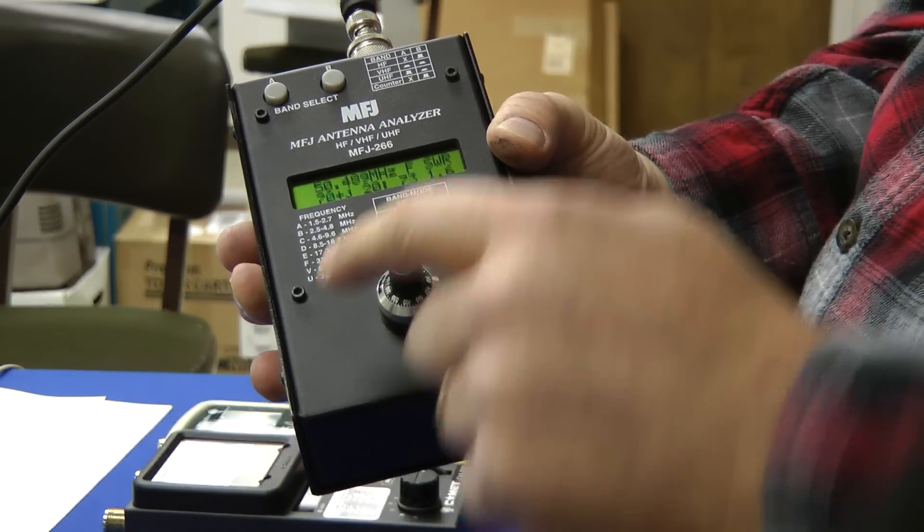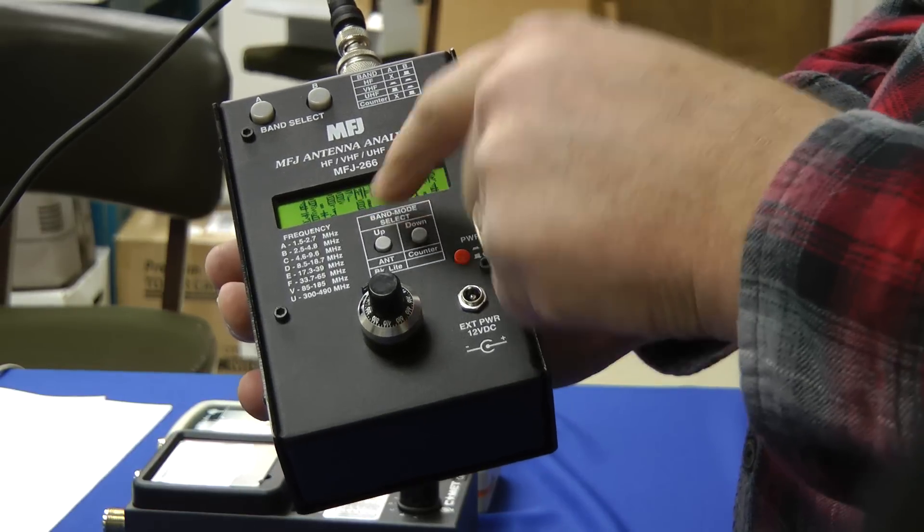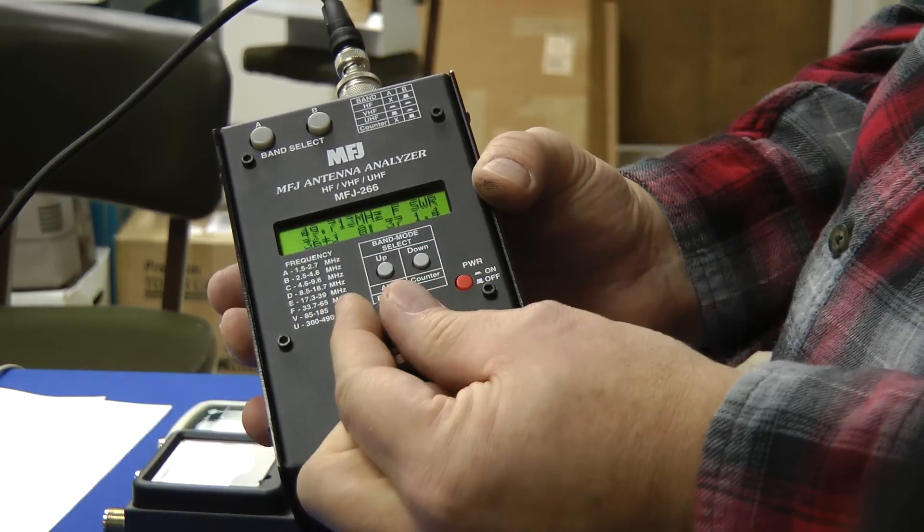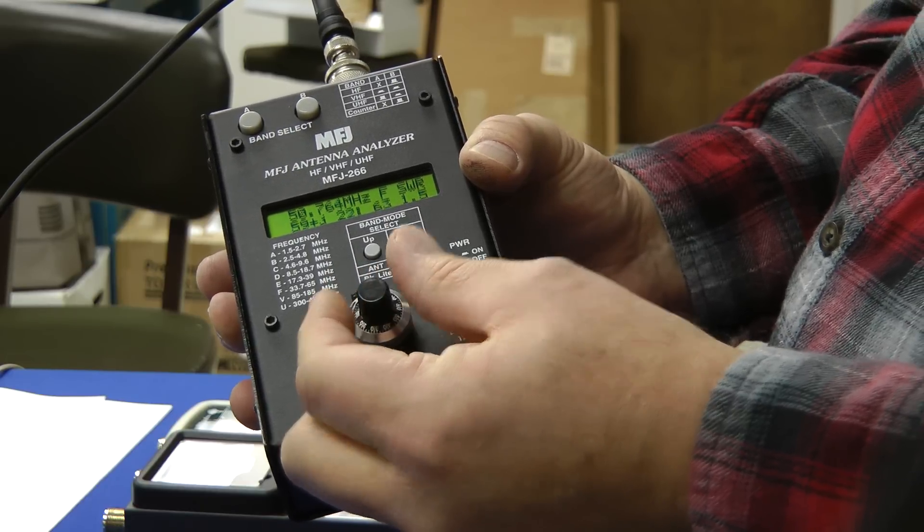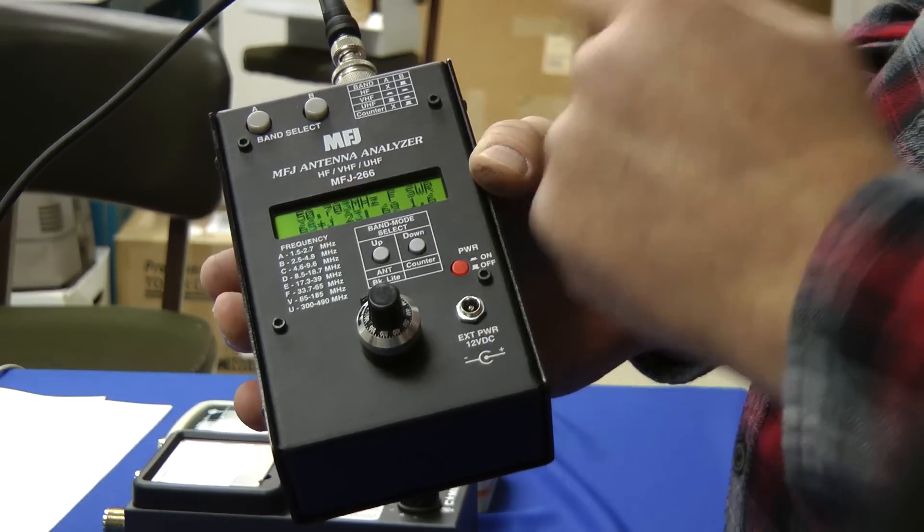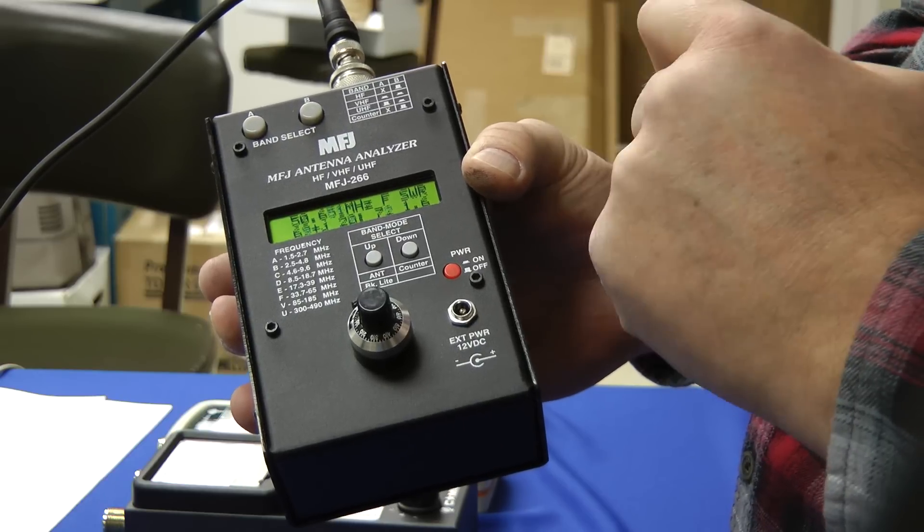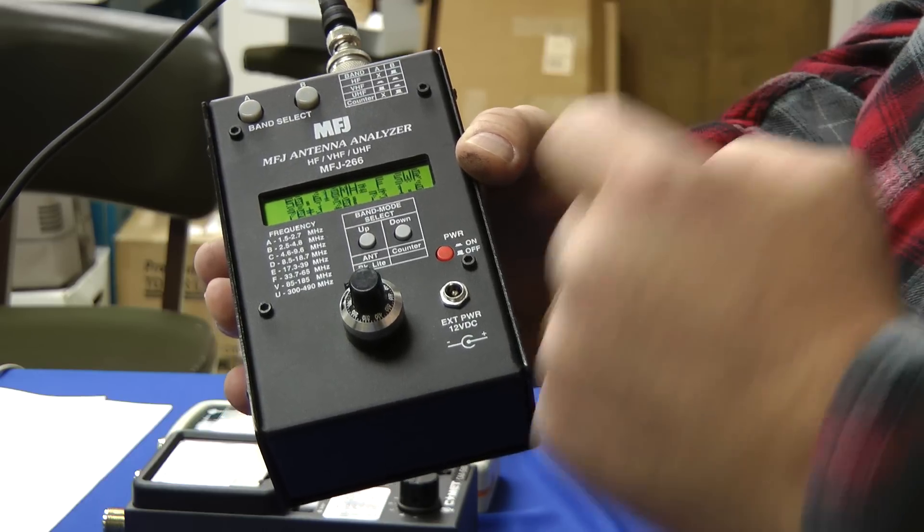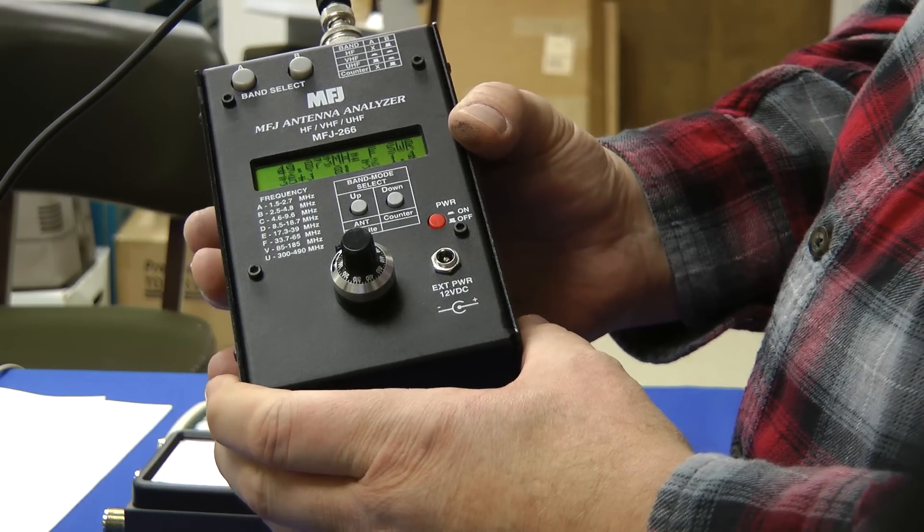Right now I'm looking at 50.4 megahertz roughly. I'll just drop down a bit and adjust it with your tune control here. We have roughly a 1.5, 1.6 to 1 SWR and 64 ohms impedance with a J23 reactive. That's a little bit inductive. Overall it's a nice sturdy metal case and typical MFJ quality.